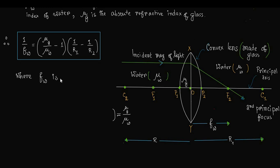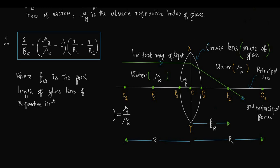Here, fw is the focal length of the glass lens of absolute refractive index μg immersed in water of absolute refractive index μw.